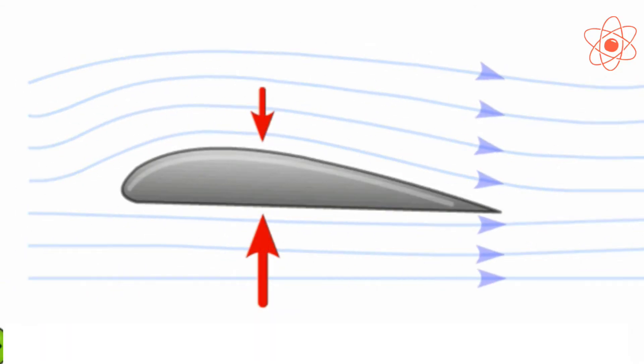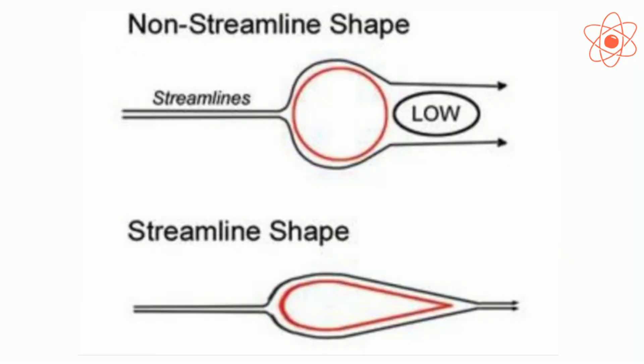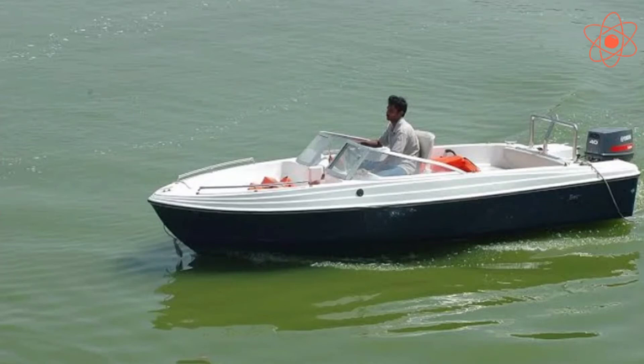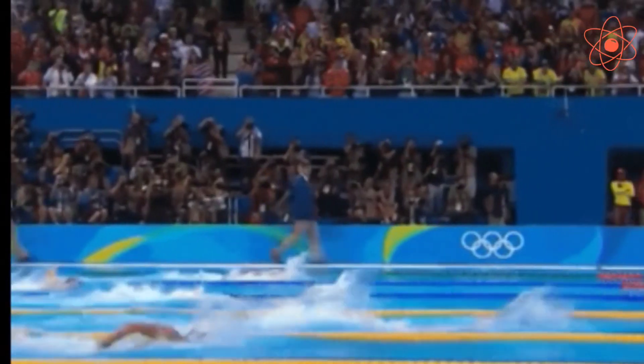Fourth, shape of the object: objects having streamlined shapes face much less frictional force than objects which do not have streamlined shapes. A streamlined shape is a special shape which is pointed at the ends and broad at the middle. For example, in nature the bodies of fish are streamlined to reduce drag due to water. Also, the bodies of ships and boats are made streamlined so that they experience less friction while moving through water.